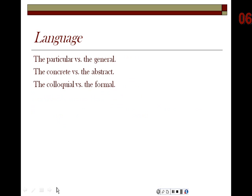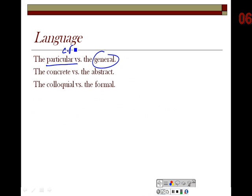We looked at language. We looked at how contemporary poetry moves more toward the particular rather than the general, with more use of concrete language versus the abstract, and more use of colloquial language versus the formal. Colloquial would include slang and even taboo language — the so-called four-letter words, vulgar language, and so on. We saw some examples of that in the poem by Sherman Alexie.